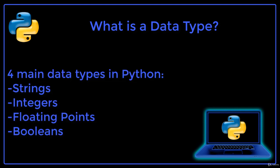There are four main data types supported by Python. They are strings, integers, floating points, and booleans.